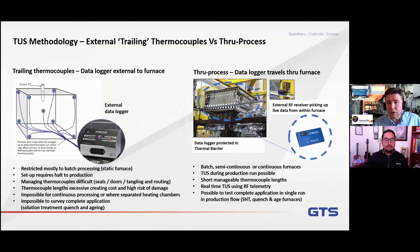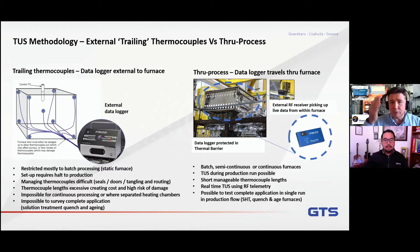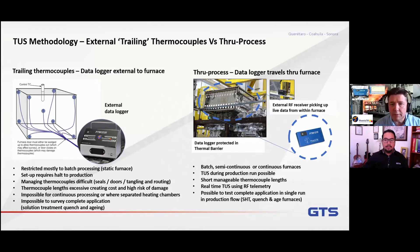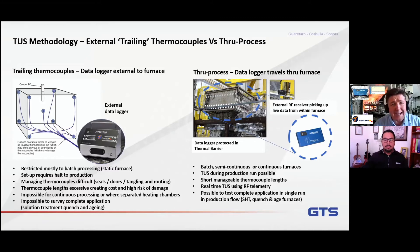Whenever you combine trailing thermocouples with any product movement, or any instrumentation with closing doors or seals, that becomes a challenge. Particularly with modern furnaces, where there's robotic loading of products, single chambers, and product moving from chamber to chamber, a trailing thermocouple may in some circumstances even be impossible to use.